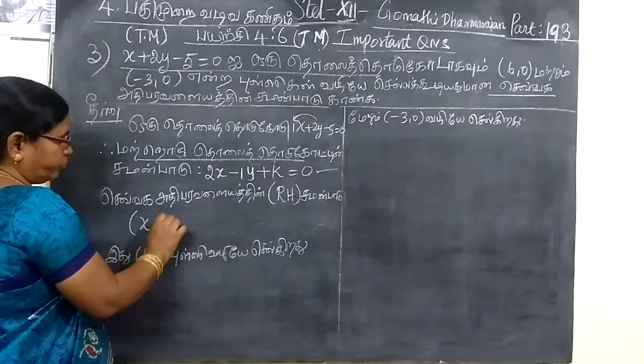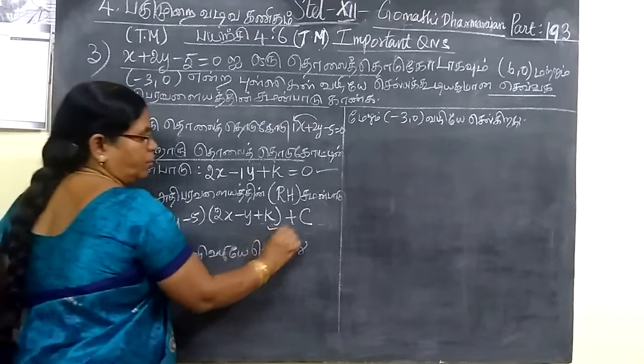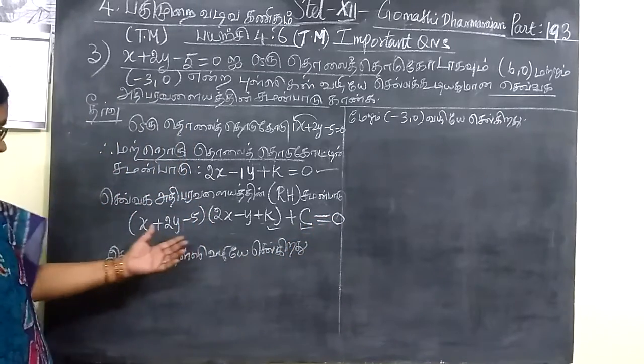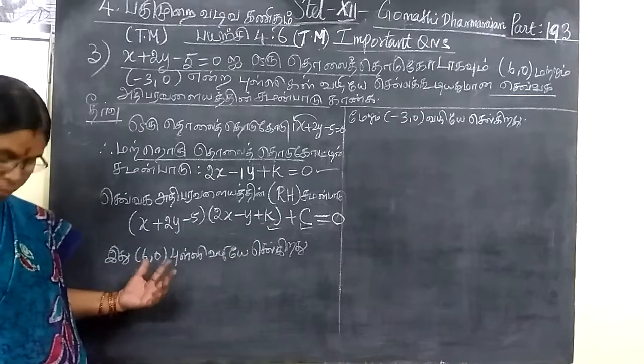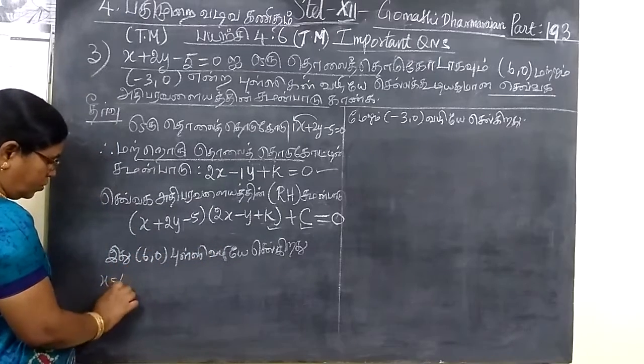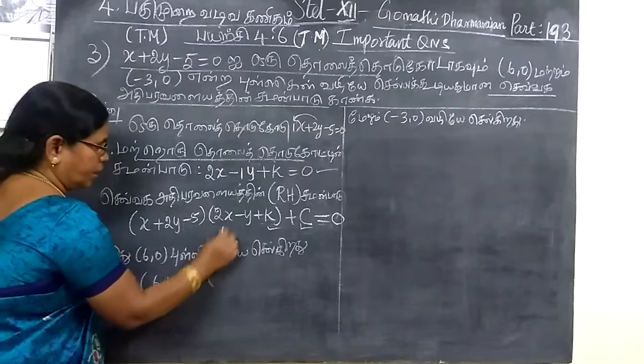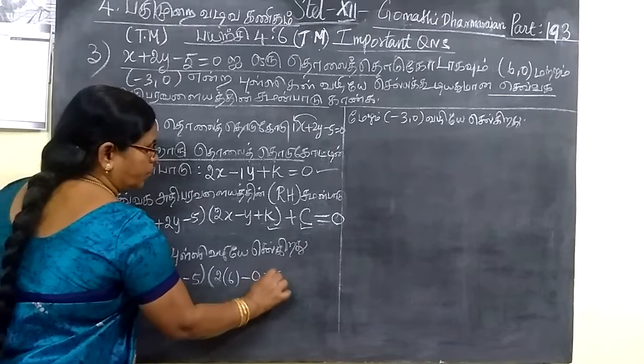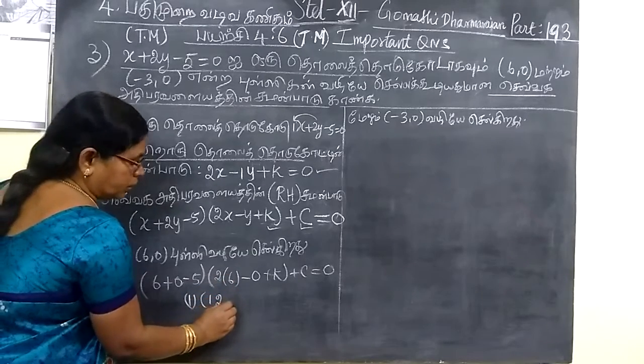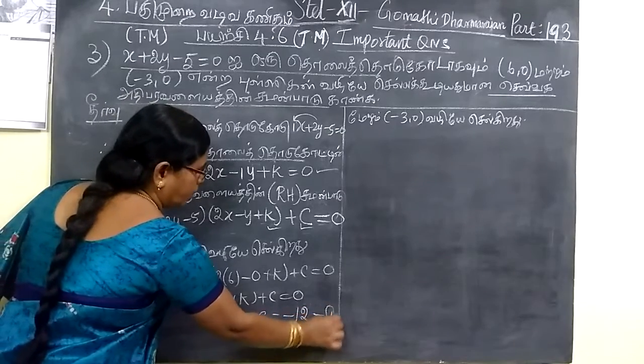So you can write x plus 2y minus 1, then 2x minus y plus k plus c equal to 0. x value is r, y value is -1. Then substitute: r minus 1 plus k plus c equal to 0. Therefore, k plus c equal to minus 1, and this is equation 1.